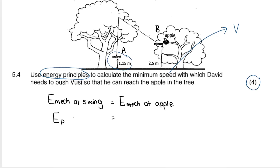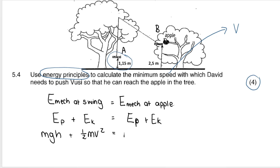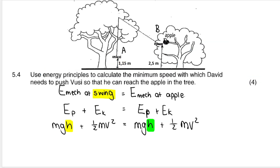Mechanical energy equals Ep plus Ek. So at the swing: Ep + Ek, and at the apple: Ep + Ek. Expanding further: mgh + ½mv² on both sides. For the swing side, substitute the height at the swing (1.15 m). For the apple side, substitute the height at the apple (2.5 m). Be very careful which height goes where.